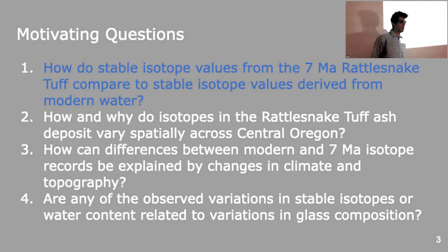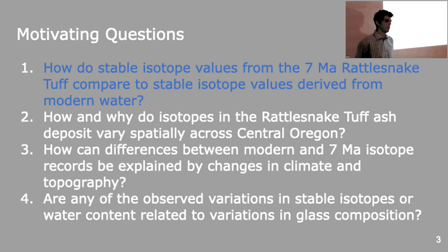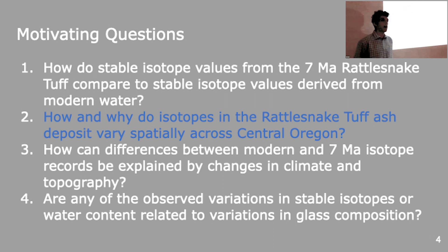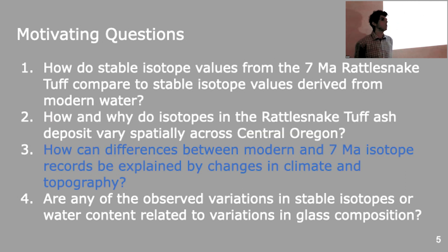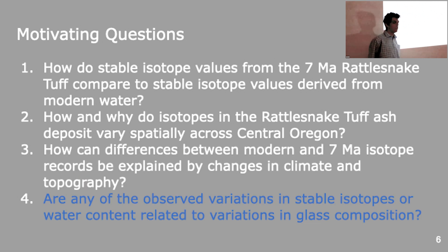I want to start in a slightly non-traditional way, just by sharing the questions that motivated my research at the very beginning, because I think they're helpful to keep in mind. First, how do stable isotope values from the 7 million-year-old Rattlesnake Tuff compare to stable isotope values derived from modern water? Second, how and why do isotopes in the Rattlesnake Tuff ash deposit vary spatially across Central Oregon? How can differences between modern and 7 million-year-old isotope records be explained by changes in climate and topography? And finally, are any of the observed variations in stable isotopes or water content related to variations in glass composition?